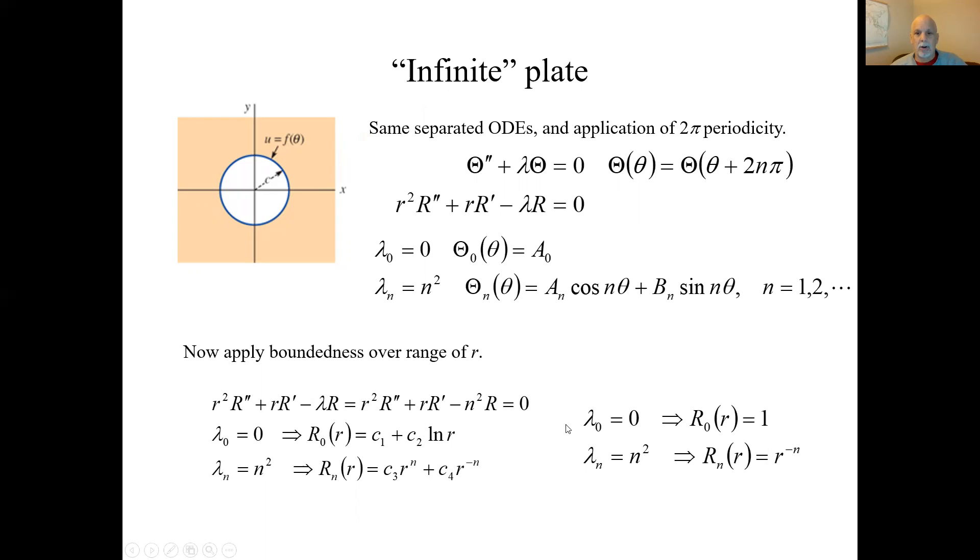Where's our R solution? Here's the R solutions. As R goes to infinity, the natural log goes to infinity, so again we have to set C₂ to 0. As R goes to infinity, this guy's okay, he goes to 0, he stays finite. But this guy goes to infinity, he blows up, so we set C₃ to 0.